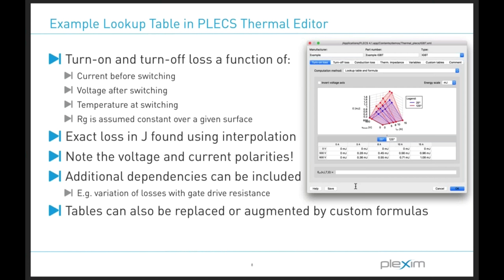At the top, we have several different computation methods. The first is using a lookup table approach, which we have deployed here. We can also access the data by formula or a combination of the two. In the next tab, we define the thermal impedance information using the Cauer network by default, with physical values for R and C. Alternatively, there's an option to specify a Foster network, using a curve-fitting approach with resistance and time constant values.